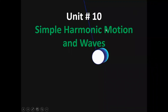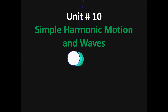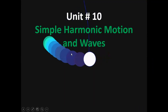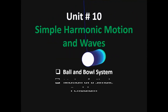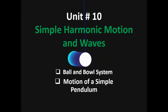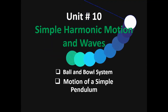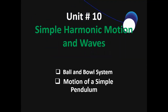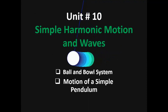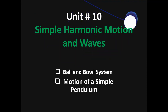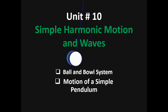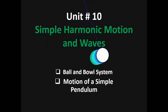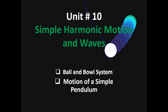Assalamu alaikum students. Today we will discuss Year 10 Simple Harmonic Motion and Waves topics: ball and bowl system and motion of a simple pendulum. In the previous lesson we discussed simple harmonic motion — a special type of vibratory motion — and the mass-spring system as an example. Now we are going to discuss the remaining two examples of simple harmonic motion.